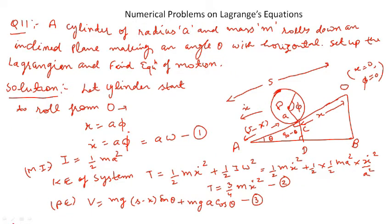The next problem: a cylinder of radius a and mass M rolls down an inclined plane making angle θ with the horizontal. Set up the Lagrangian equation and find the equation of motion. We consider the cross-sectional view of the cylinder as a disk. When it is at point O of inclined plane AOB, y = 0 and x = 0. As it moves downward, it travels some distance along OA and also rotates about its center of mass, so let φ be the rotational angle.